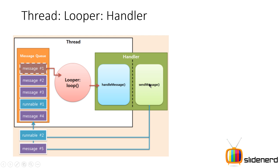You might wonder why the Handler both handles messages and sends messages at the same time. This is because the Handler will send messages from a different thread. You have a reference to the Handler object, you call send message from a different thread, and that message goes into the queue where the Looper is going to pick it up and run it inside handleMessage. So this is the basic idea of what a Thread, a Looper, and a Handler are.